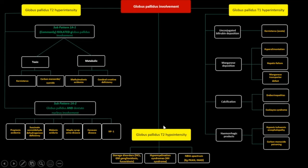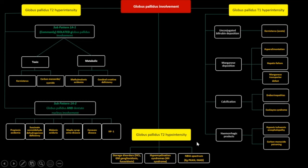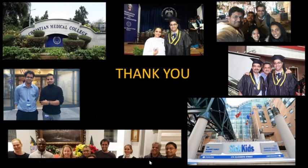T2 hypointense globus pallidus can be secondary to storage disorders such as NCL, which we saw. Other examples include GM gangliosidosis and fucosidosis. It can be due to deposition of iron in the NBIA spectrum of disorders. And it can appear T2 dark relative to abnormal white matter in hypomyelination syndromes.